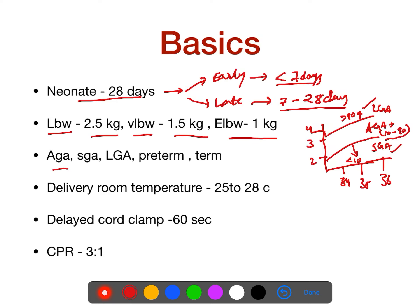What is a preterm baby? A preterm baby is one having less than 37 weeks. What is a term baby? A term baby is 37 to 42 weeks. And those more than 42 weeks are called post-dated babies.